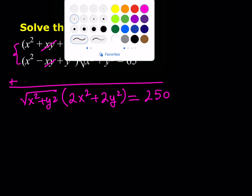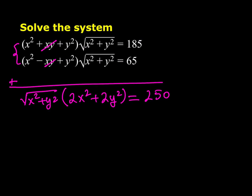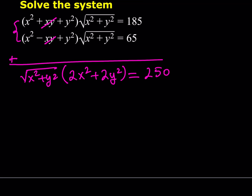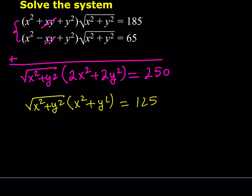We can go ahead and divide both sides by two. If we do, we get a nicer equation: the square root of x squared plus y squared, multiplied by x squared plus y squared, is equal to 125. Not only do we get a nicer equation, but we also get something significant — notice that we have the same expression inside the parentheses and inside the radical.